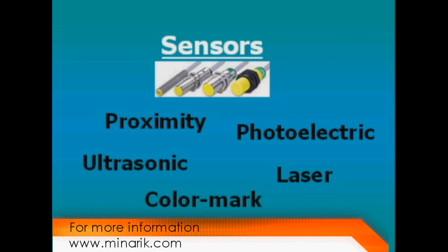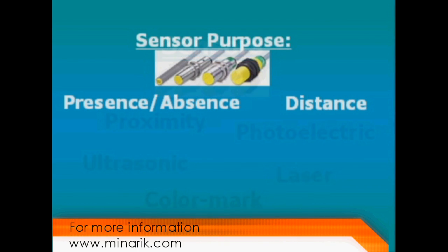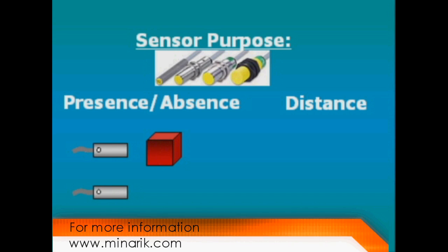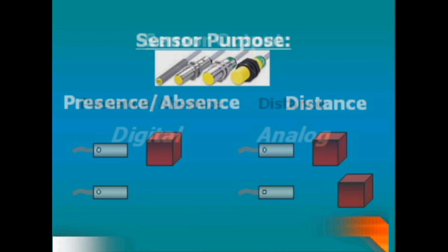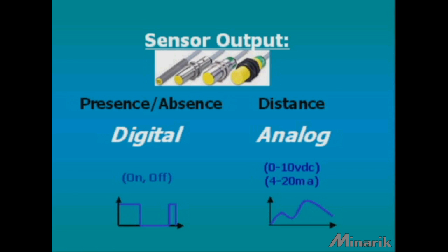There are several technologies of sensors used in machine automation. The main function of sensors is to indicate presence or absence of an object or distance from it. This is done with digital or analog outputs respectively.